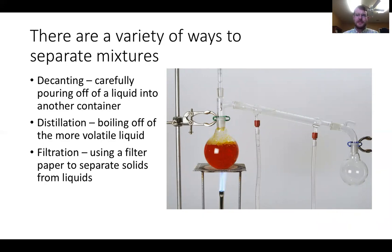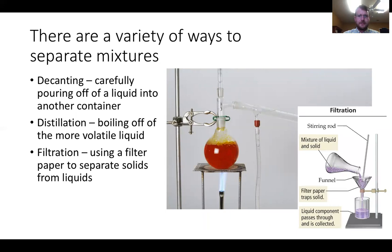Since mixtures are composed of different things, we may want to separate them — and that's something you'll do in lab. Methods include decanting, where you carefully pour a liquid into another container; filtration, where you use filter paper to catch solids and let liquid drip through; and distillation, which separates liquid from liquid using different boiling points. You'll mainly work with decanting and filtration in general chemistry.